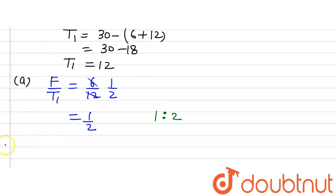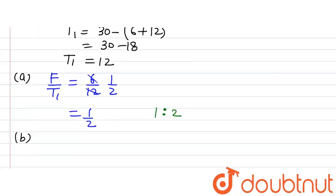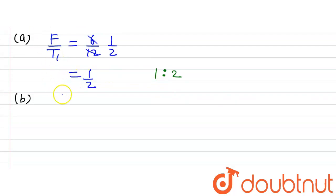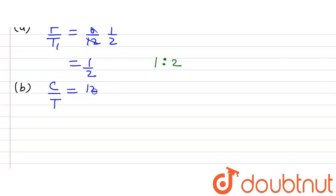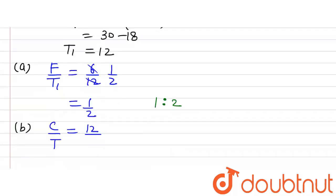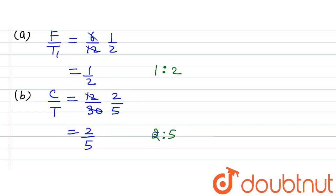This is the answer to the first part of the question. Now let's move to Part B. Find the ratio of number of students liking cricket, denoted by C, to the total number of students, denoted by T. C is equal to 12 and T is equal to 30. Dividing by 6, we get 2 divided by 5, so the ratio will be 2:5. This is the answer to the second part of the question.